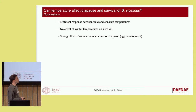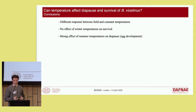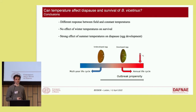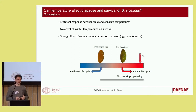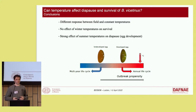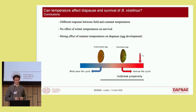To summarize: we found a difference in response between field and constant temperature conditions, no effect of winter temperatures on survival, but a strong effect of summer temperatures on diapause. Increasing temperatures can affect the life cycle of this species, shifting it from a multiyear life cycle to an annual life cycle. With increasing temperatures, a large proportion of eggs can hatch in only one summer after deposition, instead of remaining in the soil for several years. We can say that increasing temperatures due to climate change over the last decades could have contributed to the outbreaks of this species.